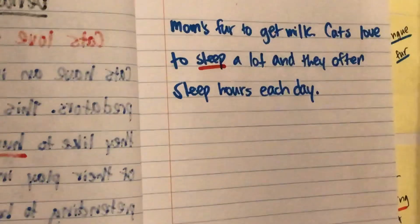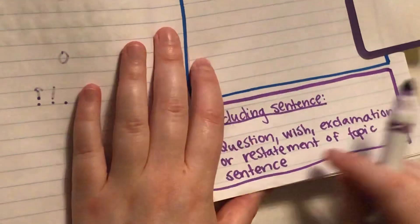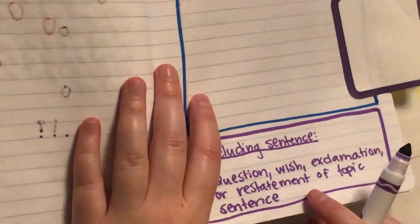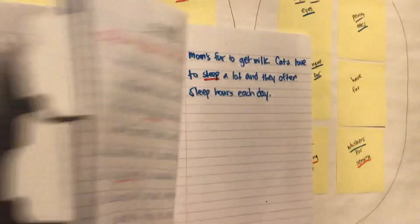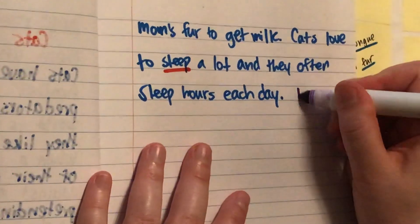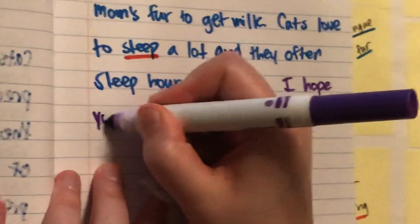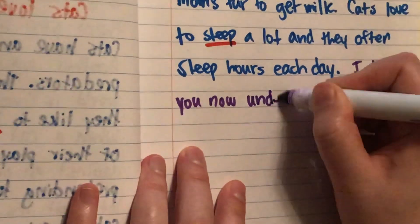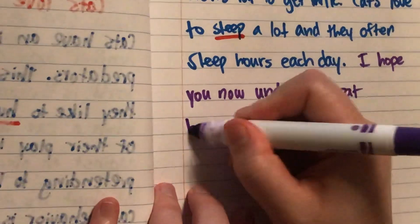Now I need to write my concluding sentence. So I can do a question, wish, exclamation, or restatement of my topic sentence. I'm going to do a wish again: 'I hope you now understand cat behavior.'